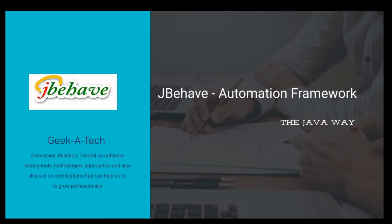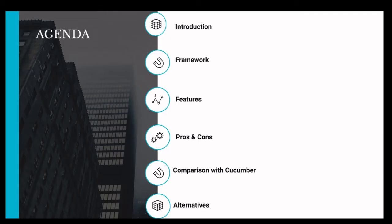JBehave is an automation framework based on BDD. I call it the Java way because it's basically purely for Java and used for Java-based applications. It's a very good tool I have used personally, and it gives support for BDD. We can write stories, we can write features — everything quite similar to Cucumber. Today we will talk about how this framework works, its pros and cons, and more. Our agenda includes: introduction, how the framework works, features supported by JBehave, pros and cons, comparison with Cucumber, and other alternatives.